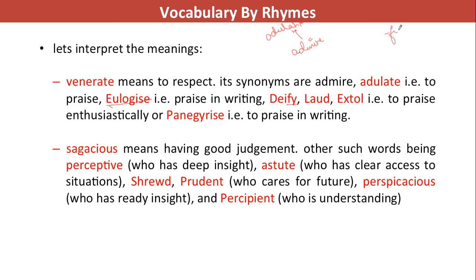Panegyrize is to praise in writing — so eulogize and panegyrize are synonyms, both meaning written praise. Sagacious means one who has good judgment. Other such words: perceptive — one who has deep insight and can analyze things very well. Astute — one who has clear access to situations and understands their gravity confidently. Shrewd means cunning in a positive way — a person who is cunningly smart in a positive sense. Prudent is one who cares for the future, who is frugal and thinks about future while taking actions in the present.